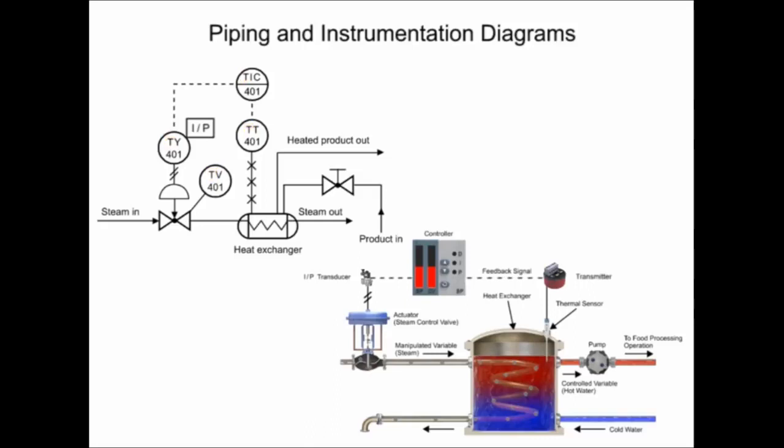The instrument connected to the heat exchanger contains two other types of information. The second letter in the functional identifier indicates it is a transmitter, and the balloon with no line inside its symbol indicates the device is field mounted.